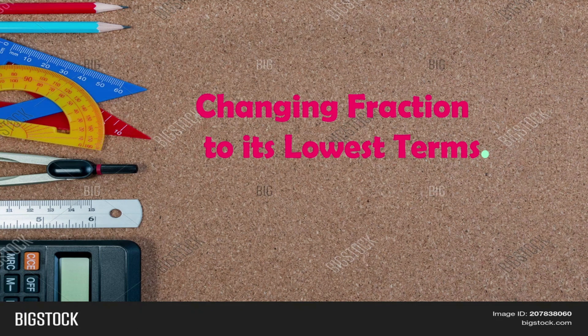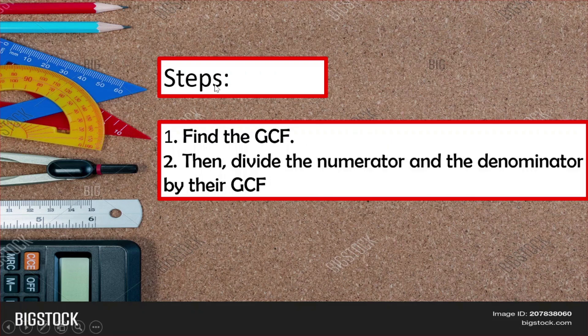Next: changing a fraction to its lowest term. Steps: first, find the GCF of the numerator and denominator; then divide both numerator and denominator by their GCF. You apply the greatest common factor — find it first, then divide both parts by it.